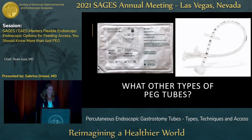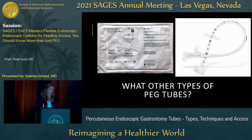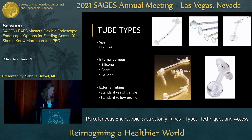Some of you may be asking what other types of PEG tubes exist. While many of us may only use one kit, your hospital will likely have more than one kit available, so it's good to know your options and where you might use one kit over another. There are three factors of the tube itself to consider when selecting a PEG. First is the size — they can vary from 12 French to 24 French. Many of us use a standard 20 French tube, but if you're using a tube for jejunal access you might use a different size.